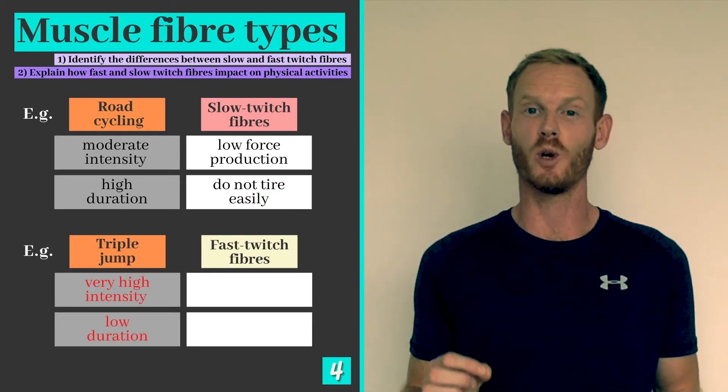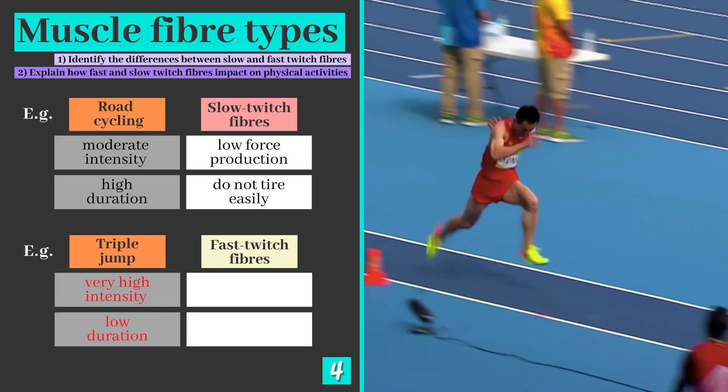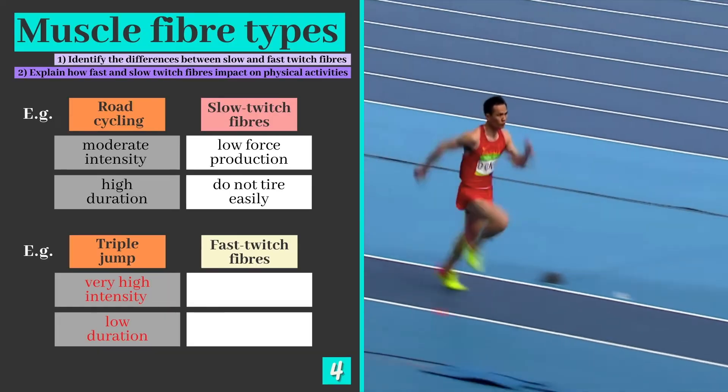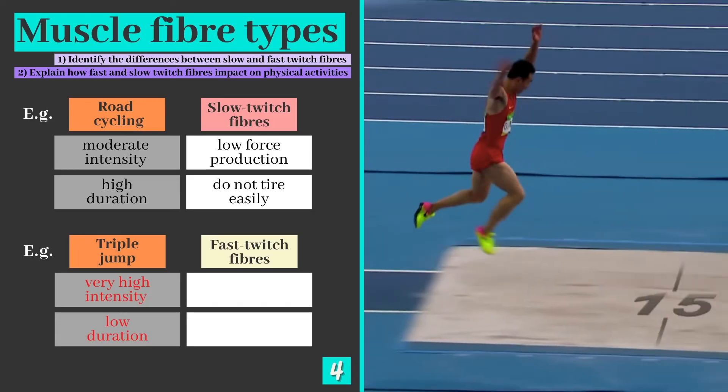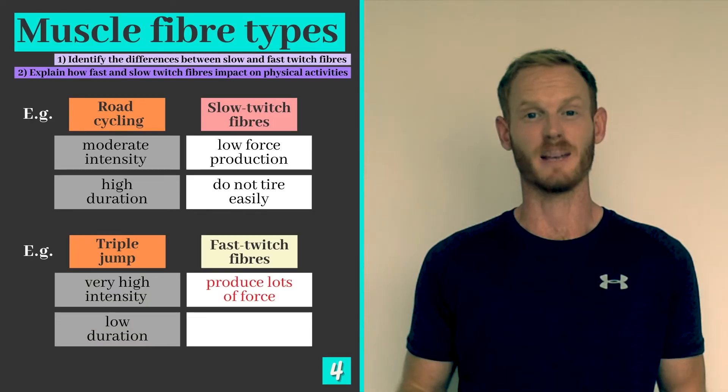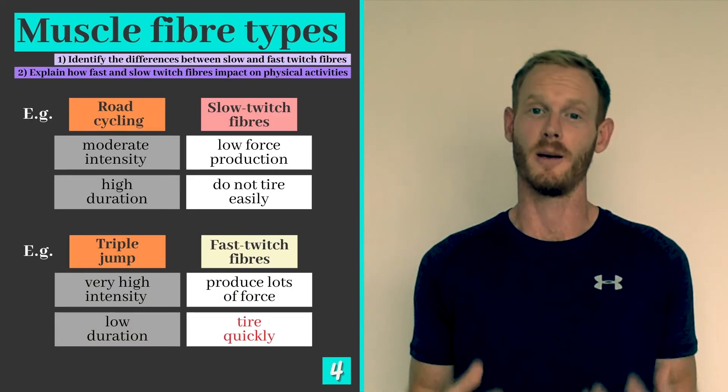Power activities such as the shot put or triple jump involve short bursts of extremely high intensity work. They are therefore suitable for individuals with a high proportion of fast twitch fibers as they produce lots of force but tire more quickly.